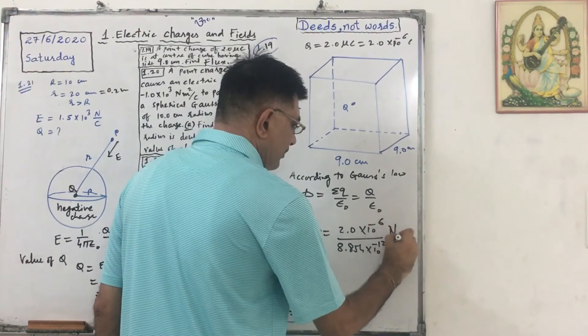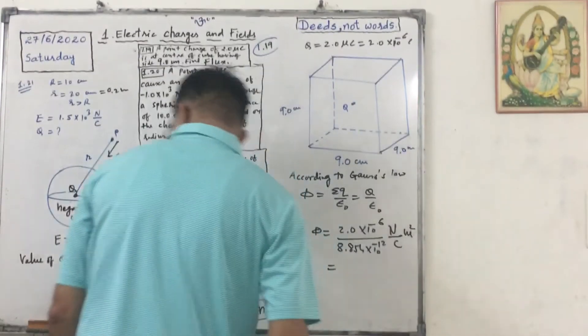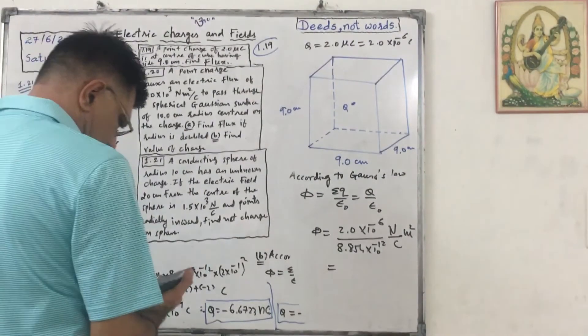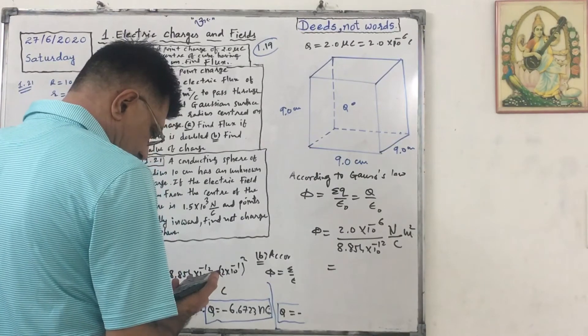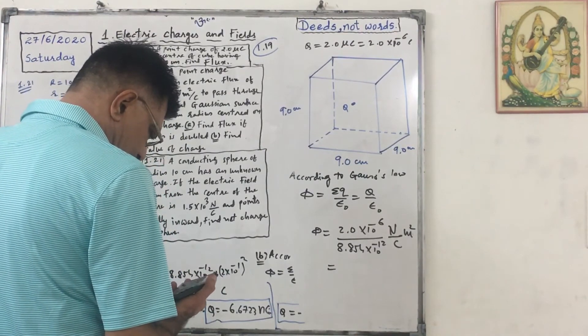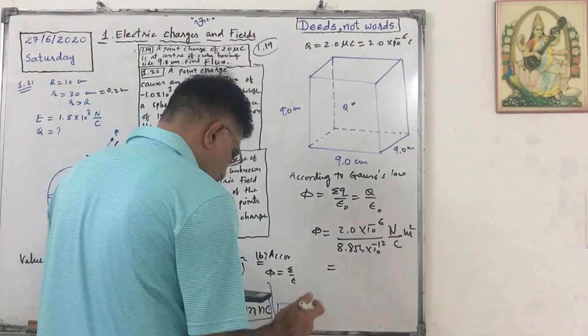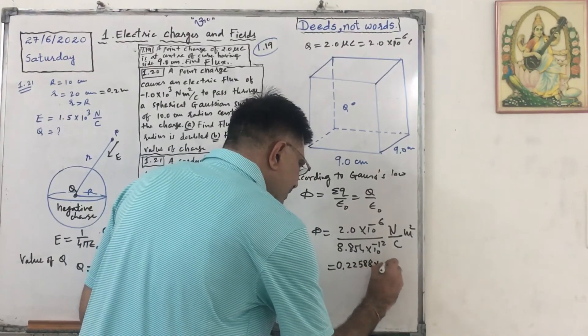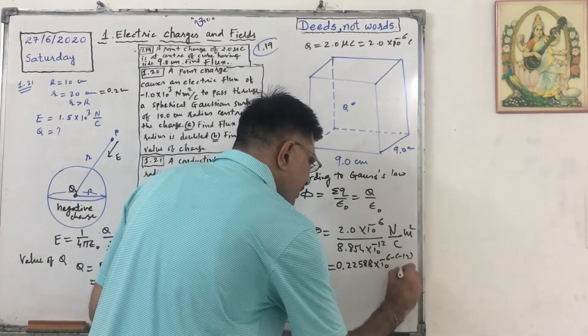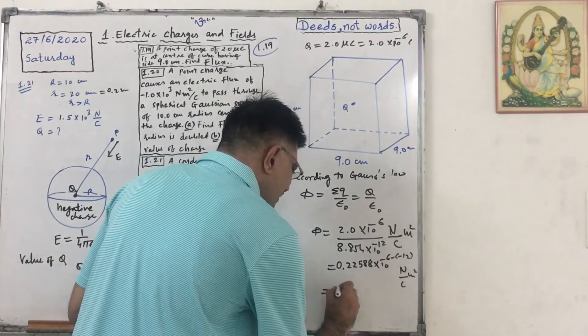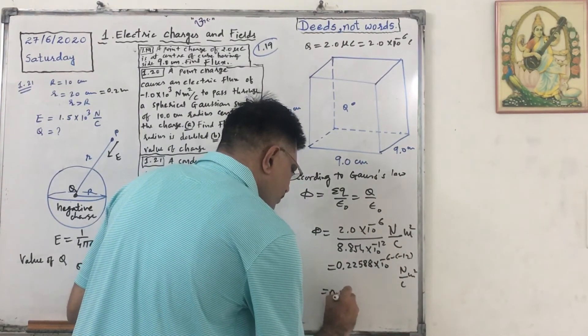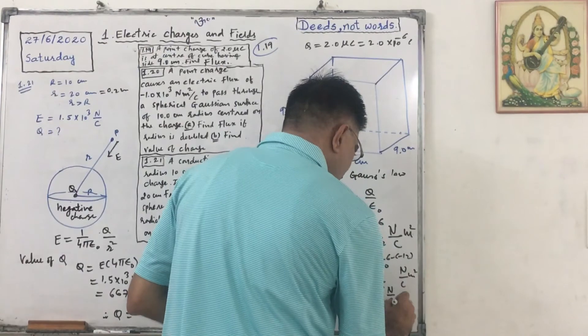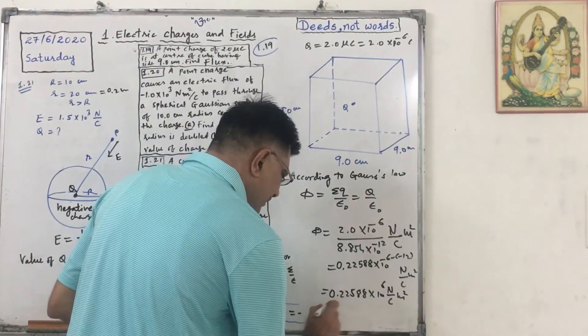Unit will be Newton per coulomb into meter square. Can be written as 0.225, 2 divided by 8.854, that equals 0.22588 times 10 raised to minus 6 upon 10 raised to minus 12, Newton per coulomb meter square. Can be written as 0.22588 into 10 raised to 6 Newton per coulomb meter square.